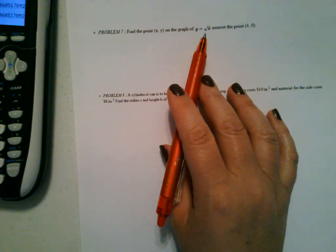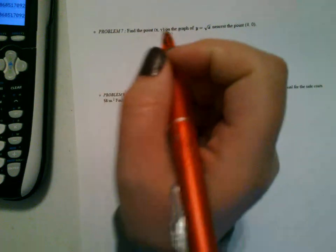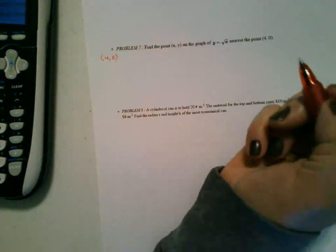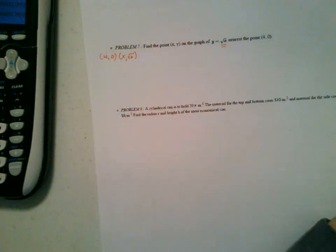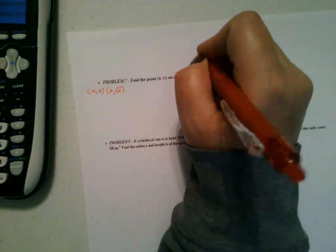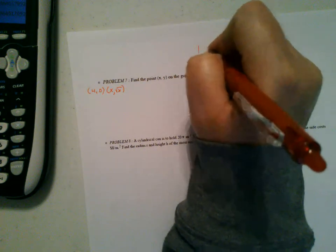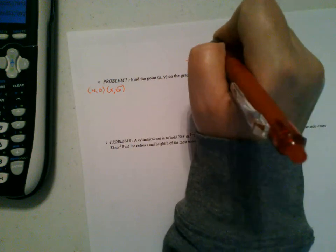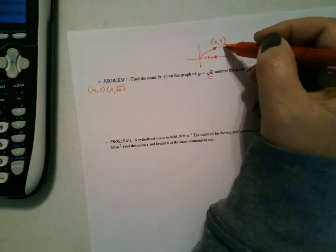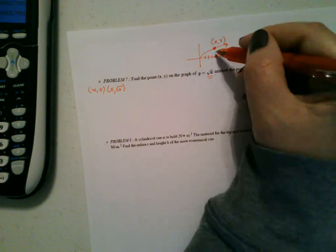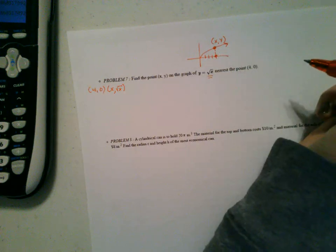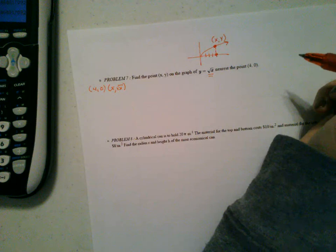Many of you made mistakes on the next one, so I wanted to go over it. We have the point (4, 0) and the point (X, √X) on the curve y = √X, and we want to know which point on the graph is closest to (4, 0). We use the distance formula: D = √((X − 4)² + (√X − 0)²), and we'll find the derivative to find the minimum distance.